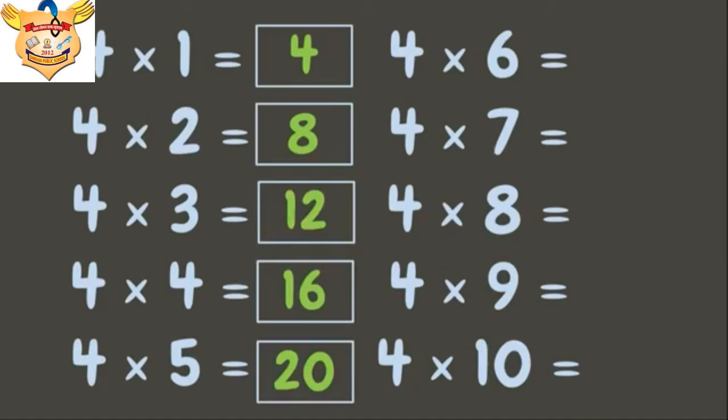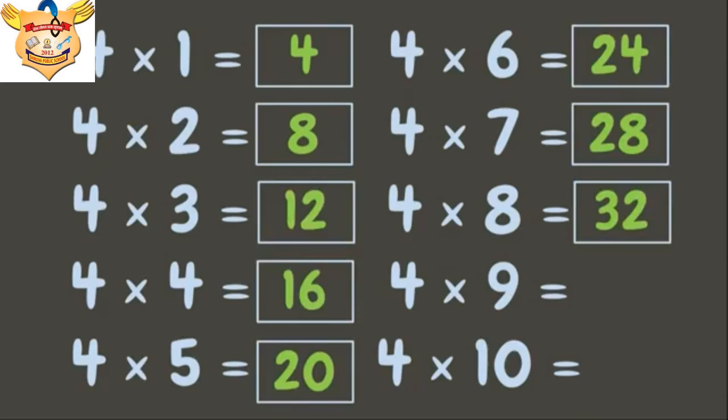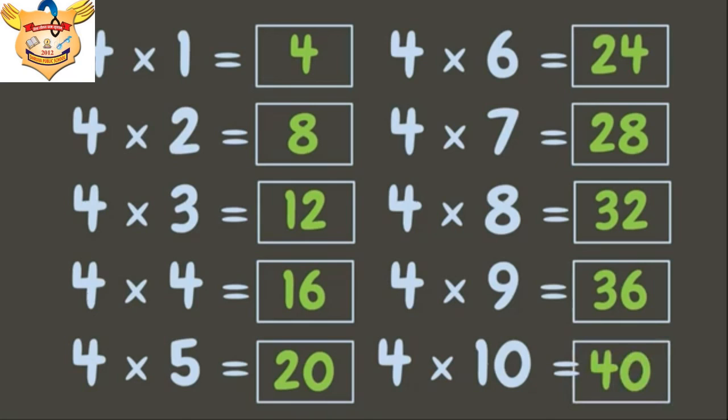4 fives are 20, 4 sixes are 24, 4 sevens are 28, 4 eights are 32, 4 nines are 36, 4 tens are 40. Very, very good.